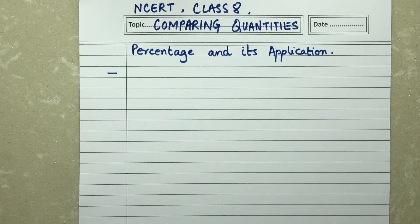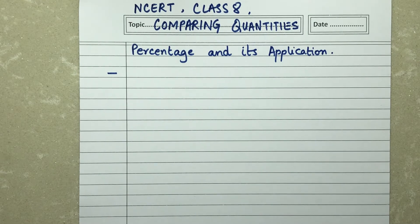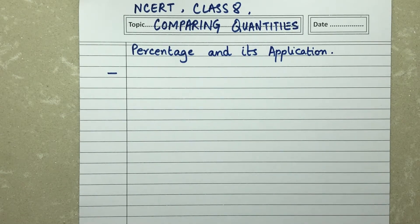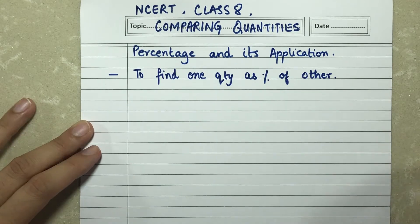Hi kids, welcome to the channel Simplified Learning with Dimple Malik. We are studying Class 8 Comparing Quantities, and the subtopic is percentage and its application. In the previous video we covered converting percentages into fractions, decimals, and finding a quantity. Today our first topic is to find one quantity as a percentage of the other quantity.